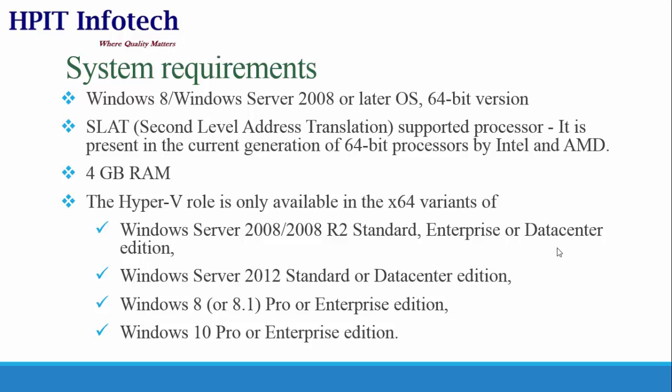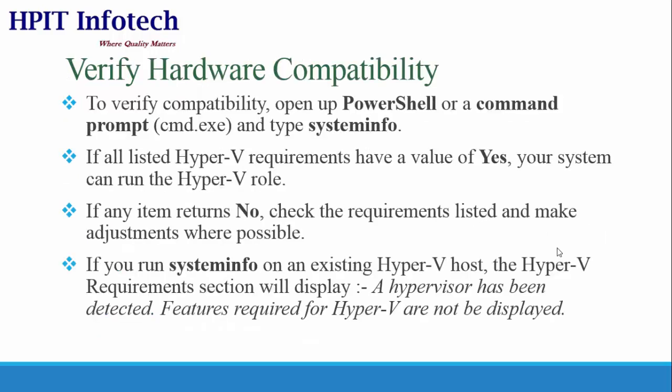The system should have at least 4GB of RAM installed. If you want to check hardware compatibility, open PowerShell or Command Prompt and type the command 'systeminfo'. In the output, if all listed Hyper-V requirements show a value of 'Yes', it means your system supports Hyper-V and you can install it.